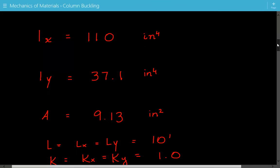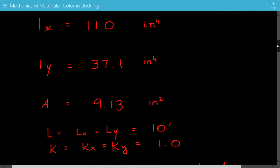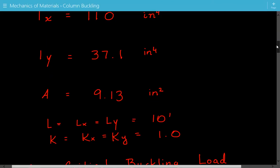The unbraced length about both axes is equal to 10 feet. The effective length factor k for both axes is equal to 1.0 because it's pinned at both ends.